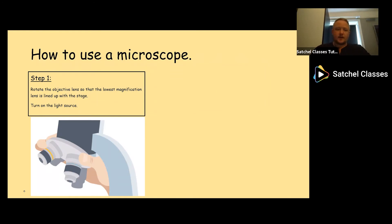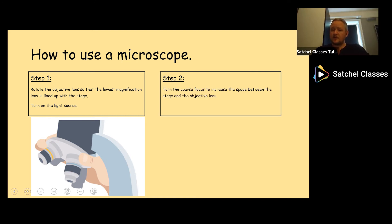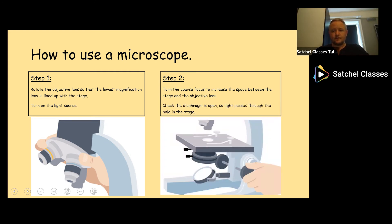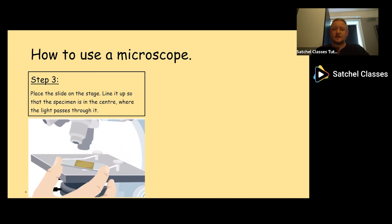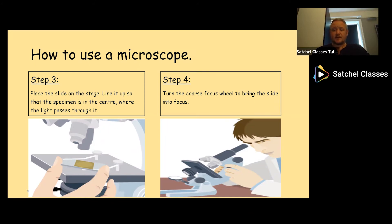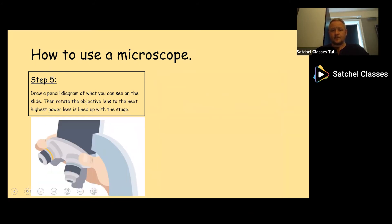So how to use it then? First thing you do, rotate your objective lens. Without putting anything on the microscope, rotate the lens so the lowest magnification lens is lined up with the hole in the stage. Then turn on your light source and make sure the light is coming through. Then turn the coarse focus, again before you put the slide on, to make the stage as far away as possible from the objective lens you're using. Then place the slide on the stage, line it up so the specimen's in the center where the light passes through. Then step four, turn the coarse focus wheel to bring the slide into focus.